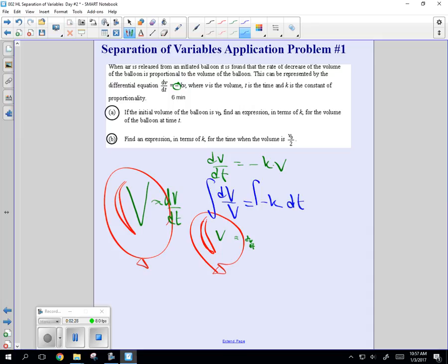So when we integrate now, what's the integration, what's the antiderivative of dv over v? Natural log of v. And the antiderivative of negative k dt is just negative k times t. Don't forget your plus c.